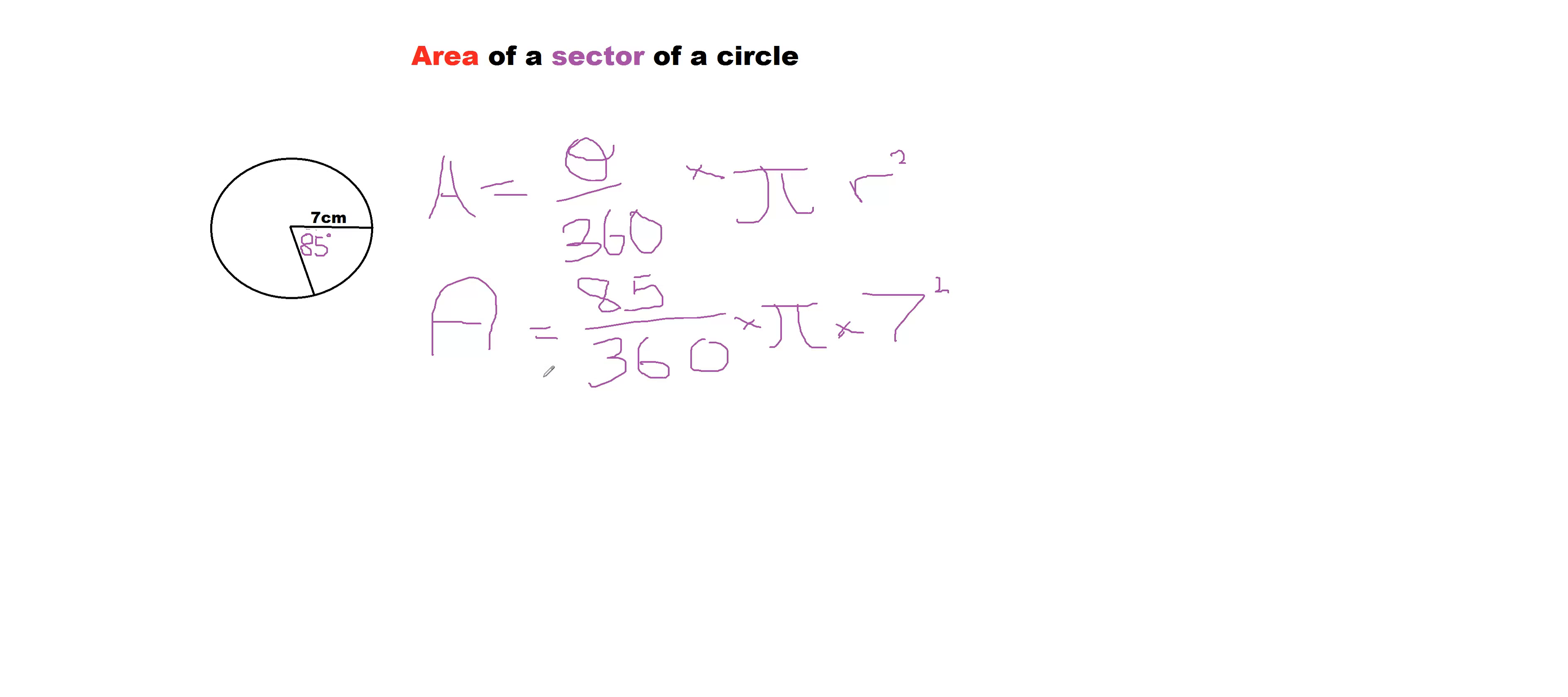Okay, so now what we're going to do is start completing this in manageable parts. So I'm just going to pull up my calculator. Okay, so we'll go A equals, and maybe we'll do this part first, just over here. So A equals 85 over 360 times that by pi, and 7 to the power of 2 is 7 times 7. So if we remember our 7 times tables, and it's okay if we don't, we'll just keep practicing, that is 49.